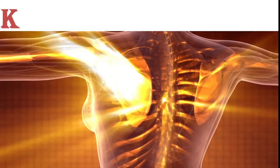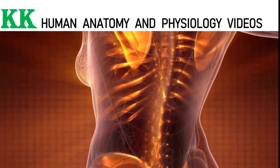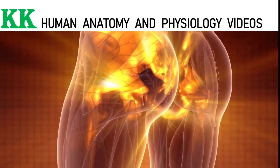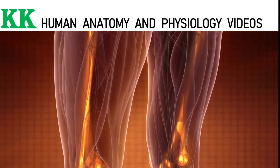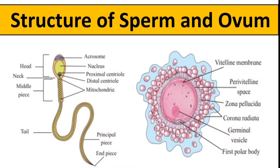Hello everyone, welcome to KK Human Anatomy and Physiology Videos, a platform where you will get interesting and informative facts about human anatomy and physiology. In this video we are going to discuss the structure of the male gamete, that is sperm, and the female gamete, that is ovum.